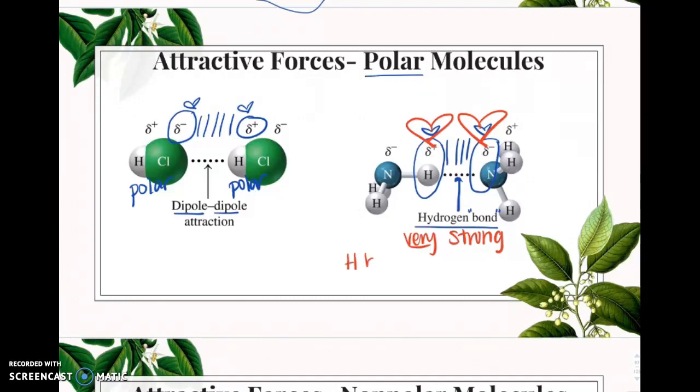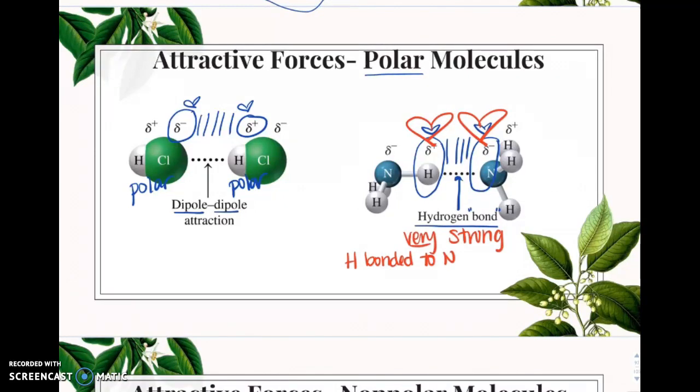So, how can you tell if something is a hydrogen bond? You have to have hydrogen bonded to N, O, or F. So, hydrogen to nitrogen, oxygen, or fluorine. And, it also is going to have an interaction between... So, like this hydrogen is bonded to the nitrogen, right? That's our first checkpoint.